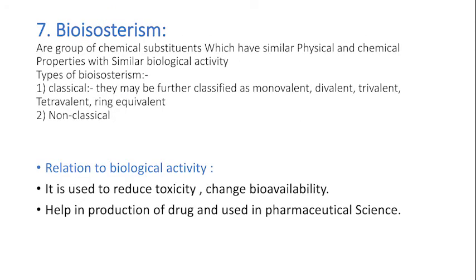The seventh property is bioisosterism. Bioisosteres are a group of chemical substituents which have similar physical and chemical properties with similar biological activity. There are two types of bioisosterism: classical and non-classical. Classical may be further classified as monovalent, divalent, trivalent, tetravalent, and ring equivalent. Relation to Biological Action: It is used to reduce toxicity, change bioavailability, help in production of a drug, and is used in pharmaceutical science.